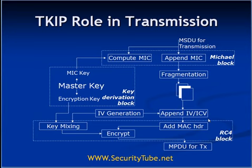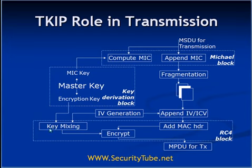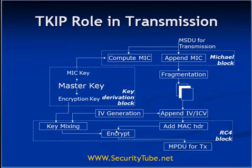You may or may not have MIC depending on whether fragmentation is done. The same IV also goes as input to the key mixing block. As discussed in the sequence counter video, key mixing has two phases: phase 1 inputs are the lower order 2 bytes of IV, encryption keys, and other relatively static inputs; phase 2 inputs are the higher order 4 bytes of IV, MAC addresses, and encryption keys. From the key mixing block a key stream is produced, and with that key stream the actual packet is encrypted. Once encrypted, the MPDU is transmitted.